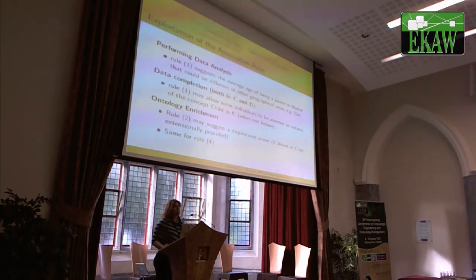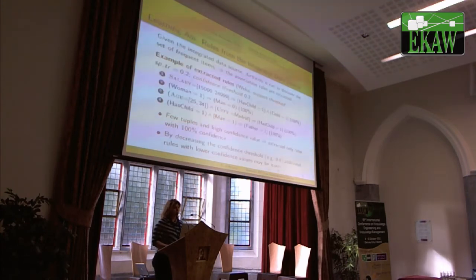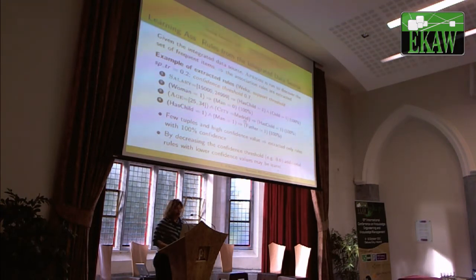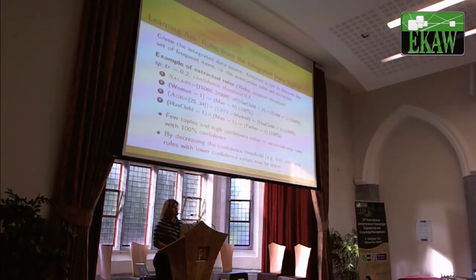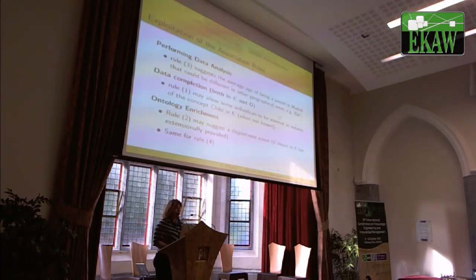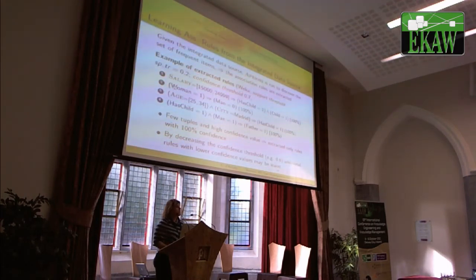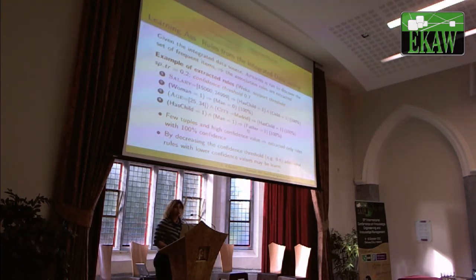What can we do with these extracted rules? First, we can perform data analysis — for example, rule number three may suggest the average age of being a parent in the Madrid area, which could differ from another area such as Bari. Second, we may use rules for data completion — rule number one may be exploited to inductively assert a new individual as an instance of the concept child, given a certain confidence value. Third, we may perform ontology enrichment — for example, rule number two may be exploited for adding a disjointness axiom, which is quite often missing in available ontologies, or other rules may suggest a possible concept definition for the concept father.